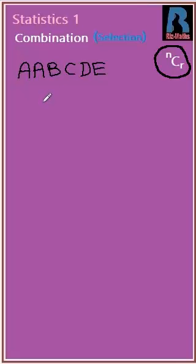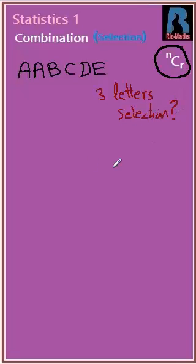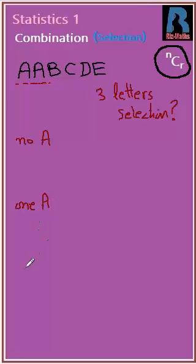In this case, the total number of selections of three letters is required. When we have identical items, we make different cases: selections in which there is no A, selections in which there is one A, and selections in which there are two A's. We'll consider each case one by one.